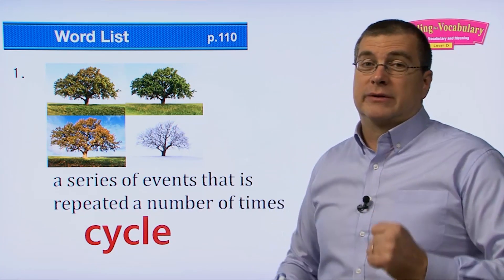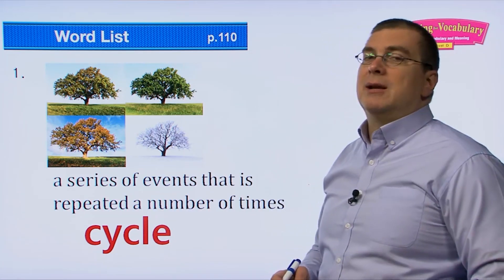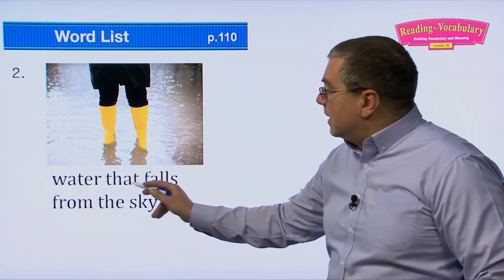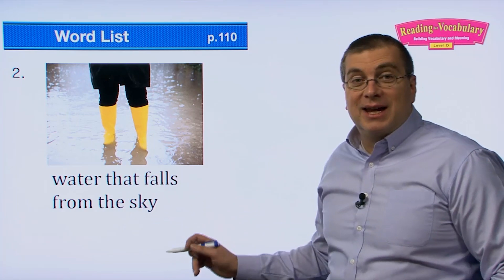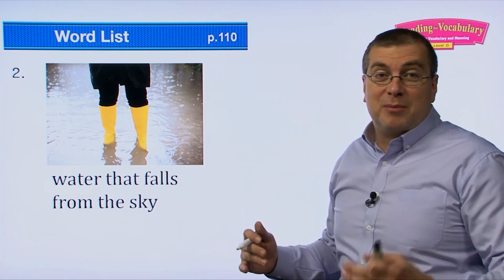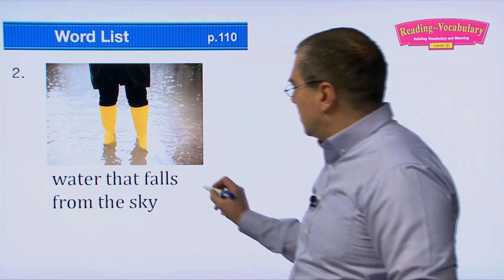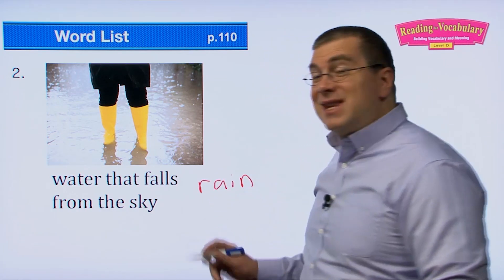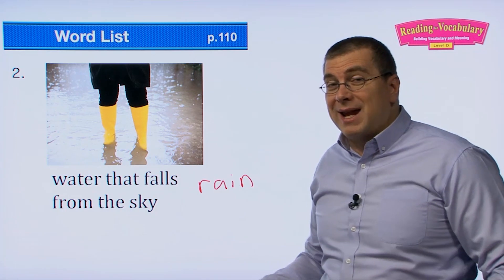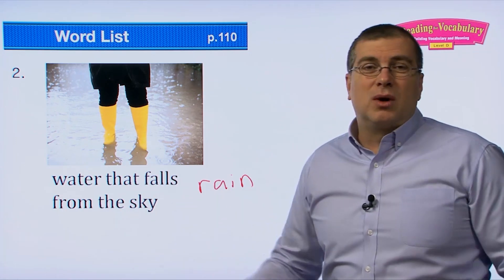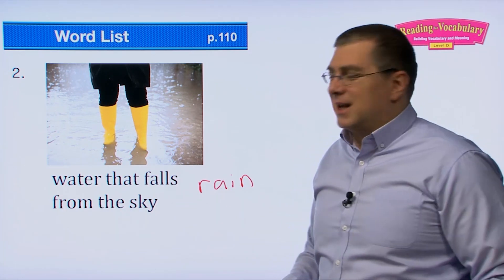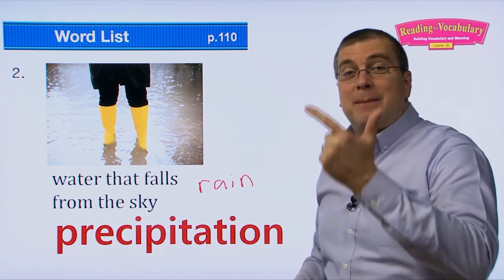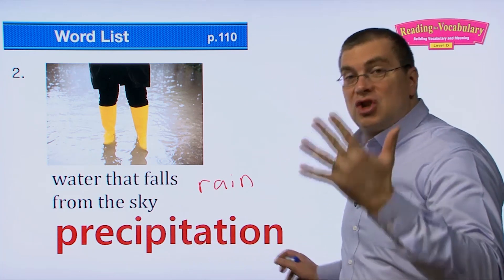There are many types of cycles in the world around us, and we'll talk about one in the reading passage. Word number two: water that falls from the sky. You're probably thinking about rain — that's an easy word — but there's another, more scientific word for rain. It's longer: pre-ci-pi-tation.